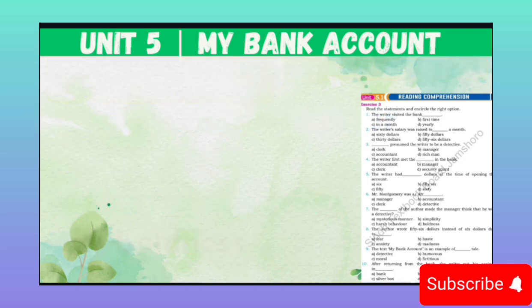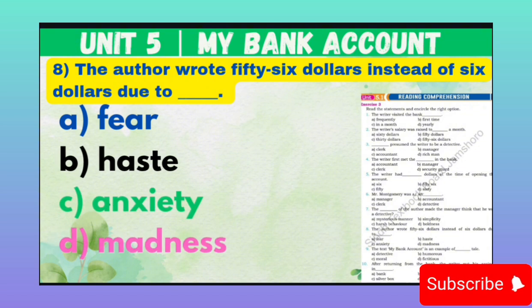MCQ number 8: The author wrote 56 dollars instead of 6 dollars due to blank. It means musannif ne kis ki wajah se chhe dollar ke bajaye chhapan dollar likhe. Option A: Fear. Option B: Haste. Option C: Anxiety. Option D: Madness. Correct option is A — Fear.